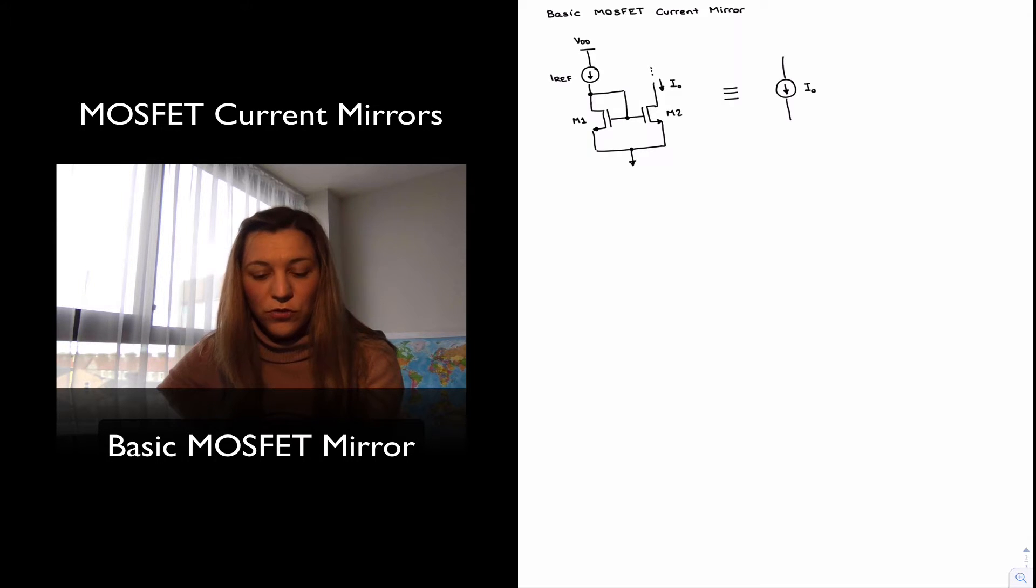It consists of two MOSFET transistors with their gates connected. One of those transistors, transistor M1 in this figure, is diode connected. So that basically means that the drain is connected to the gate. And then the main idea behind the operation of any current mirror is that you generate a reference current, hopefully a very accurate and stable reference current somewhere in your circuit, and then you mirror it at other places in your circuit.